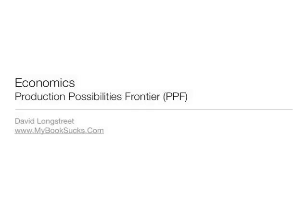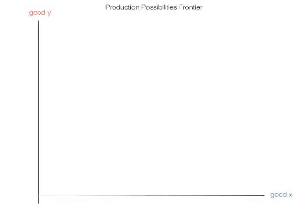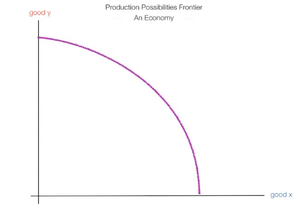In this tutorial, I'm going to talk about the Production Possibilities Frontier. This is also often called a Production Possibilities Curve. This is a single economy, and the purple line represents output at full capacity, or efficient output.